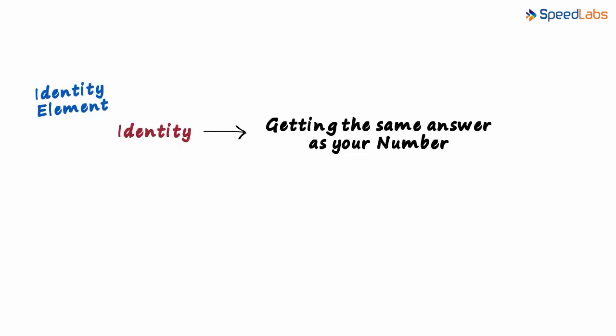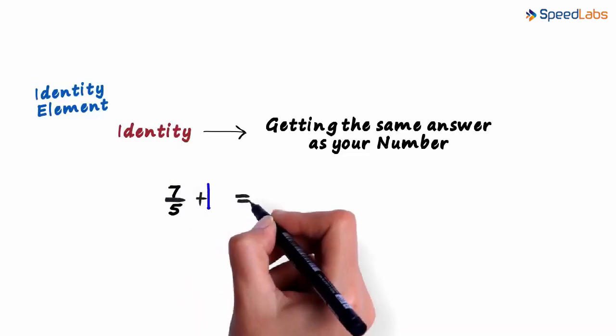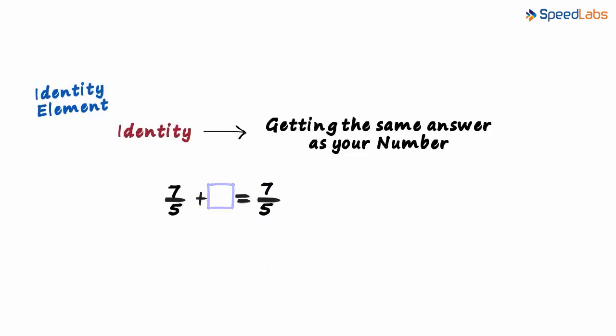What does this exactly mean? Consider the number 7/5. My question to you is: what number should we add to 7/5 to get 7/5? Think about it. Which number can we write here? The answer is 0.